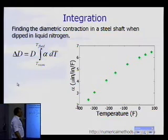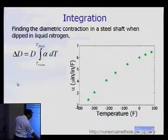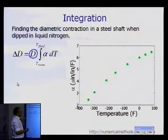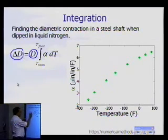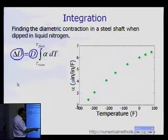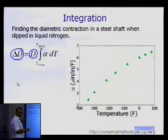You want to be able to find out what is the contraction in the diameter. This is the diameter of the shaft, and you want to find out what is the change in the diameter of that particular shaft. Now, as you can see from the data itself, you have alpha as a function of temperature, and alpha is not a constant function of temperature.